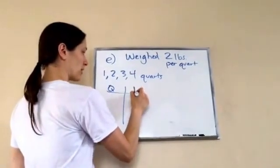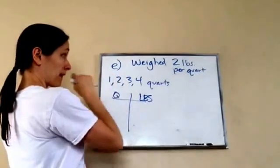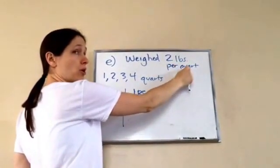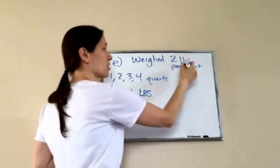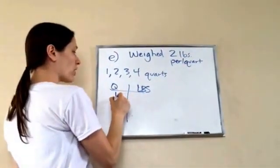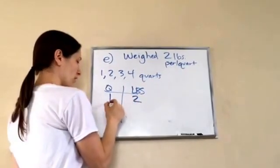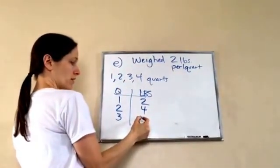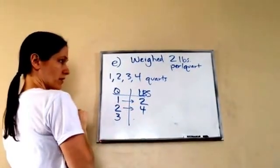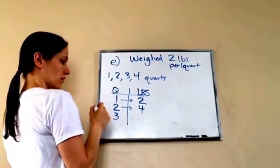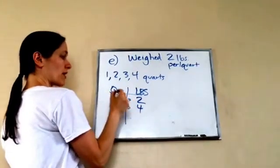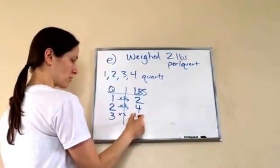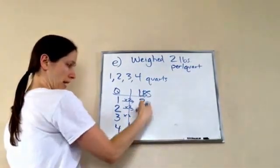So we're going to do Q for quarts and LBS for pounds. There were 2 pounds per 1 quart. For every 1 quart, how many pounds were there? 2. If there were 2 quarts, how many pounds? 4. If there were 3 quarts? 6 — because we're multiplying by 2. So I figured out my function: times 2. Three times 2 is 6. And if 4 quarts, then 8 pounds. Very good.